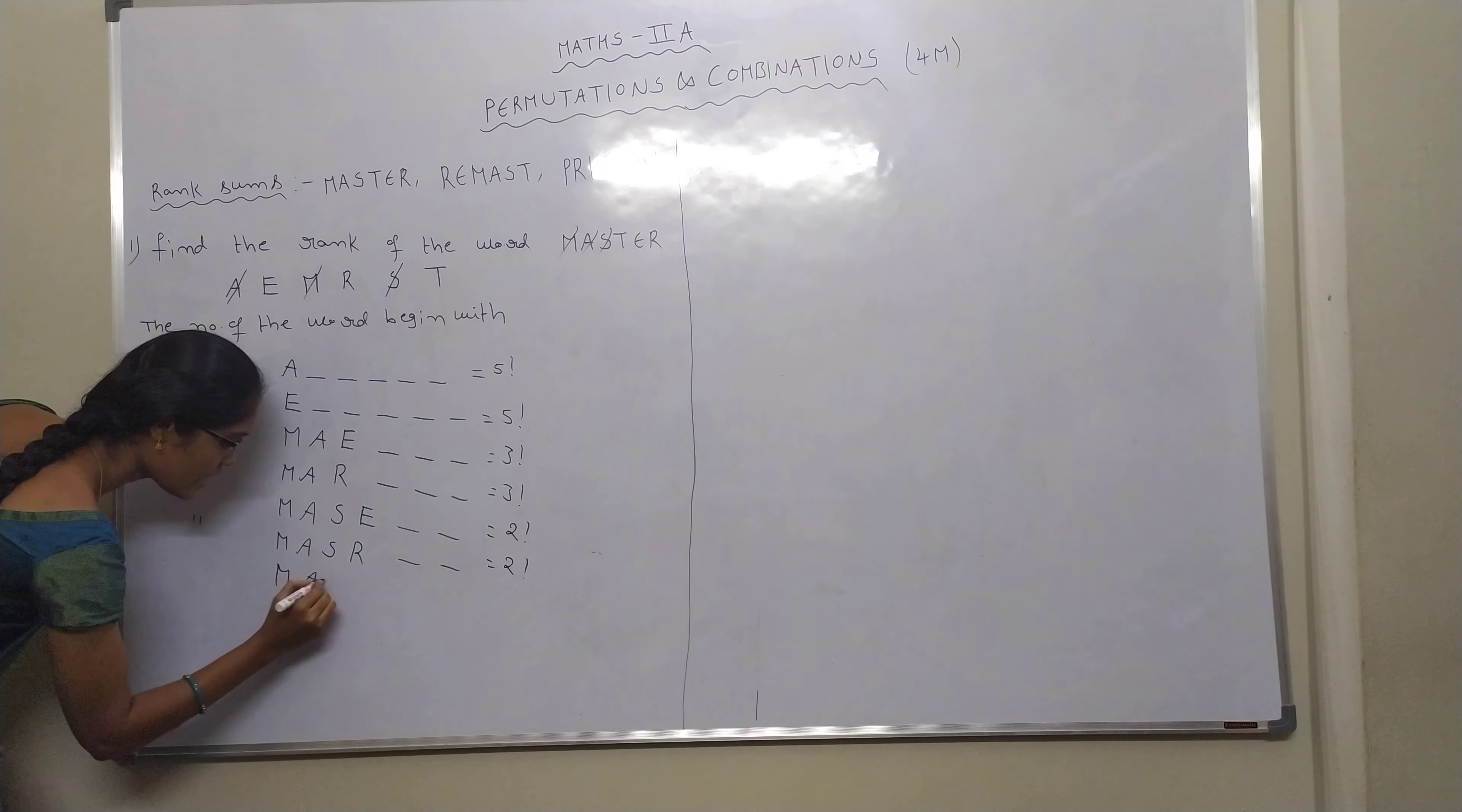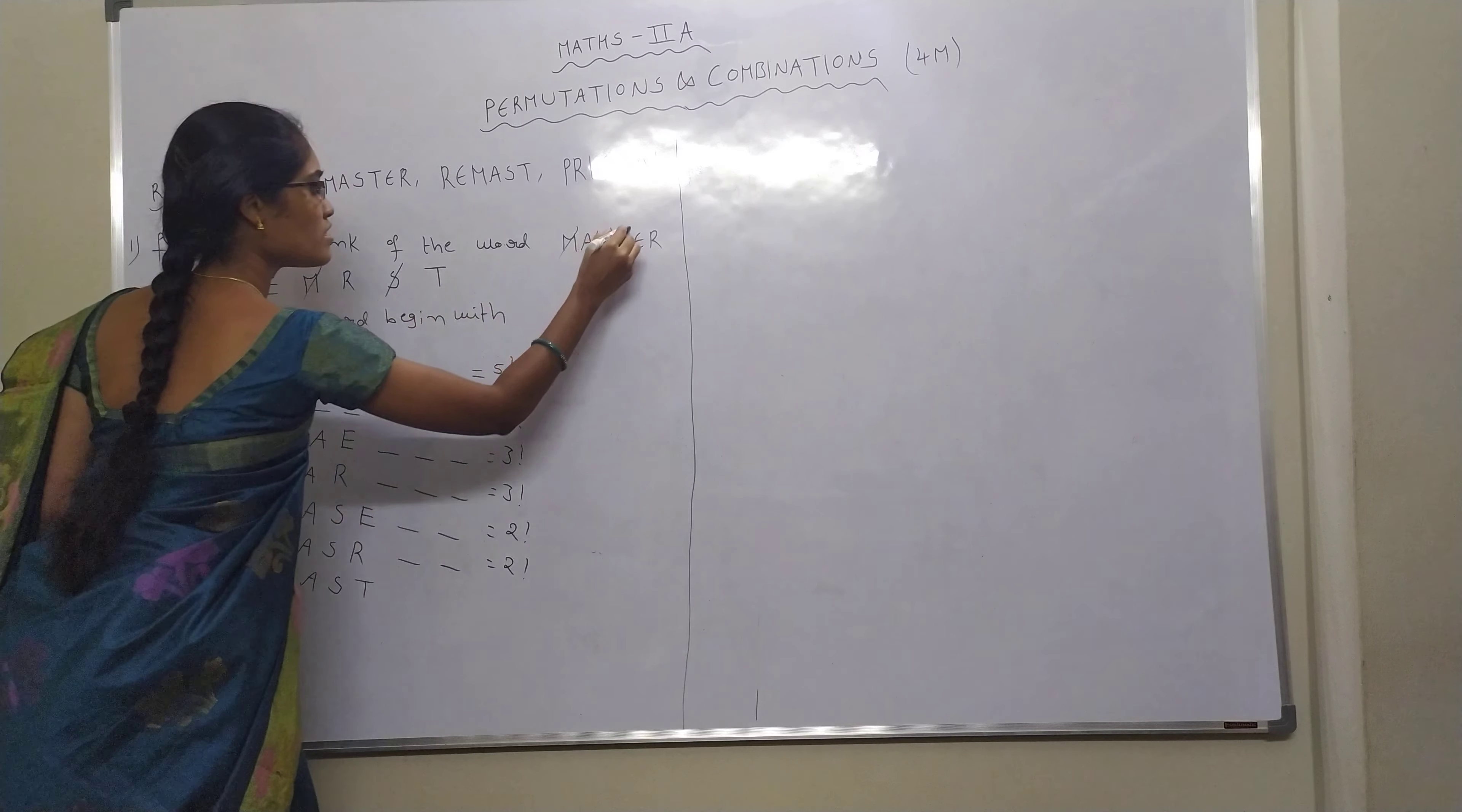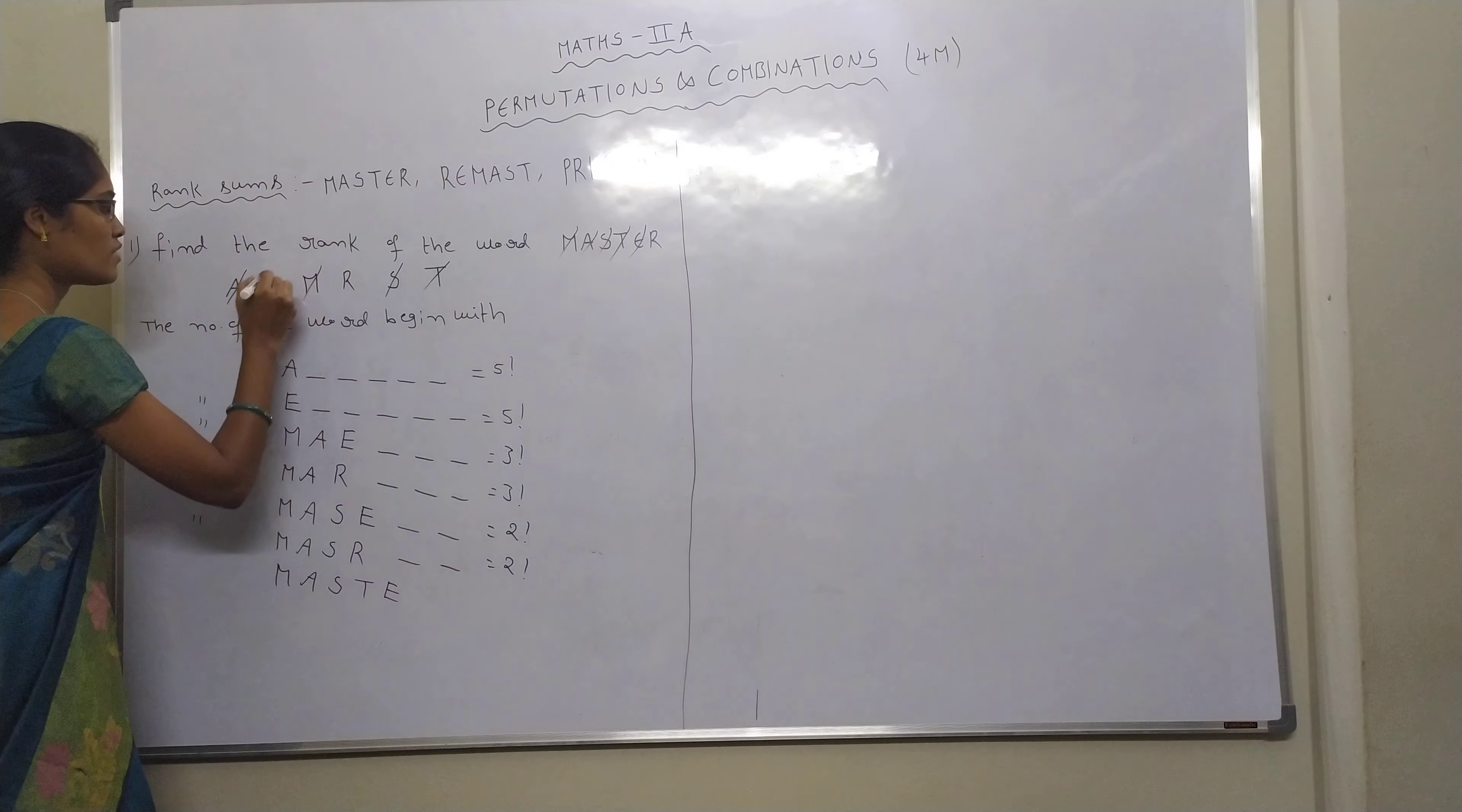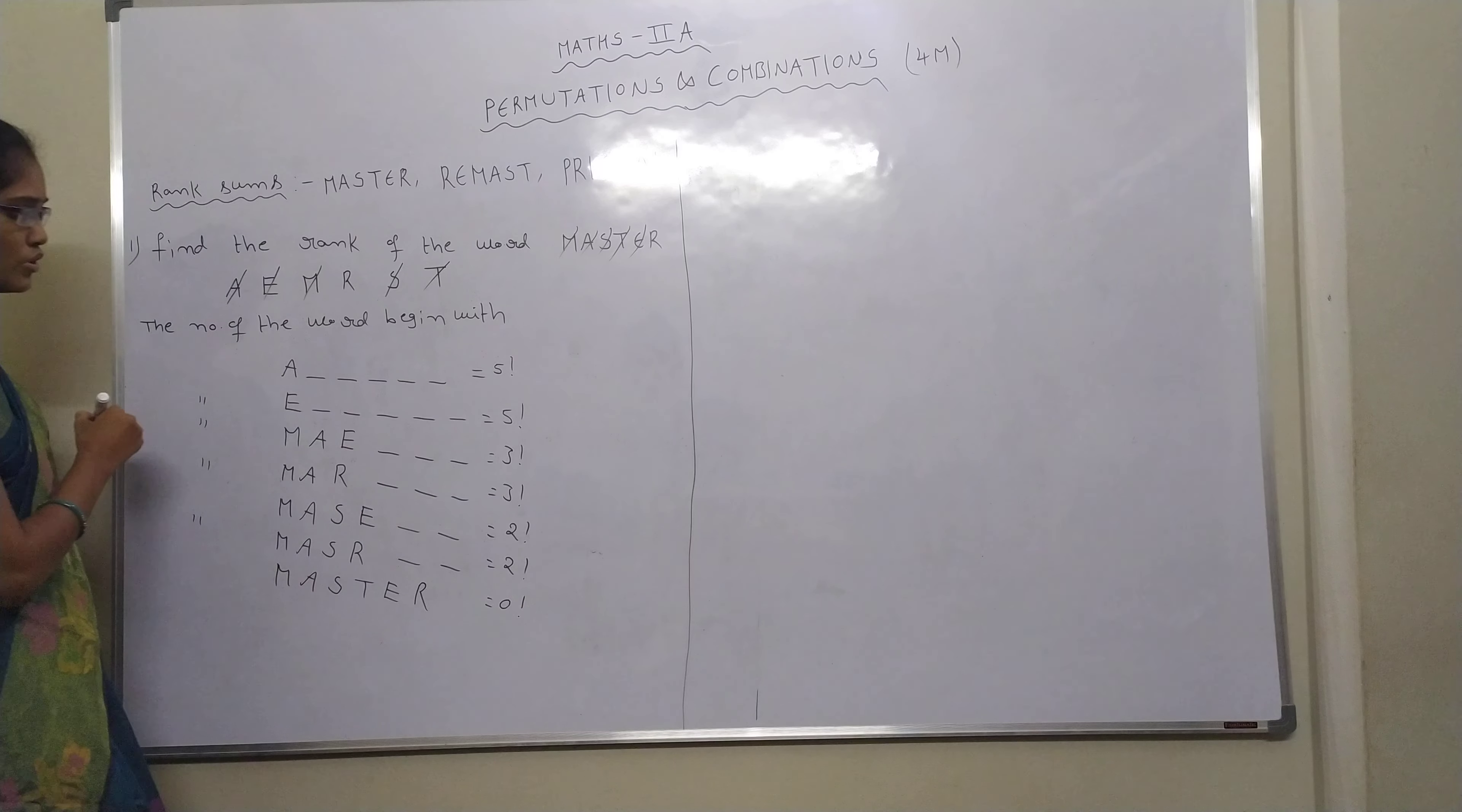Next M A S R, next is T. T we need, so cancel. Come to dictionary order. E, E we need, cancel. Next R, we need R. Last letter remaining, we need zero factorial. Zero factorial.